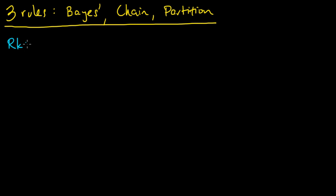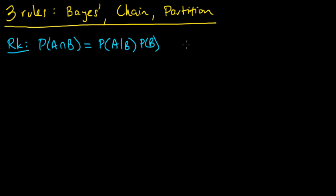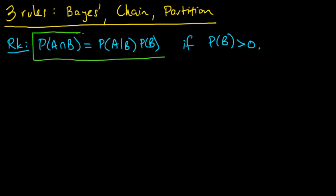Let me start by making a remark. The probability of A intersect B can be written as the probability of A given B times the probability of B, if the probability of B is positive. This is essentially the definition of conditional probability — if I divide by the probability of B, I get just the definition. It's a simple consequence, but it's extremely important. When you see this, think of factoring it in this way, and when you see this, think of combining it in this way.